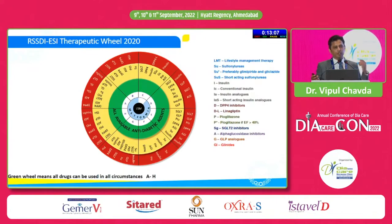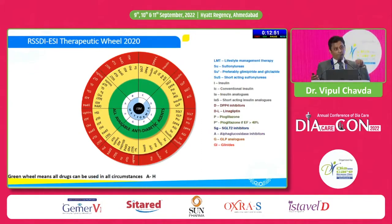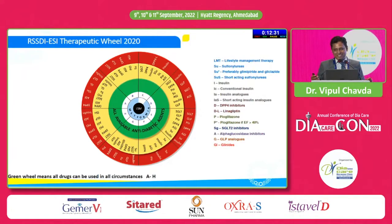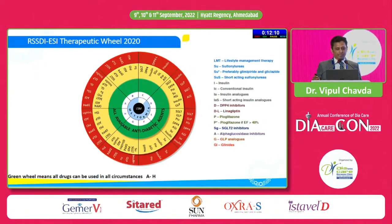D for Duration: a newly detected diabetes and a decade-old diabetes won't require the same prescription. E for Established ASCVD: from the CAPTURE study, one in three diabetics has established ASCVD, but not all are receiving proven beneficial medicines. F for Finance: in India, finances are very subjective. G for Glycemic status: A1C of 8 and A1C of 11 won't have the same therapy. H for Hypoglycemia: we should not harm our patient — there must be no hypoglycemia while achieving A1C targets.